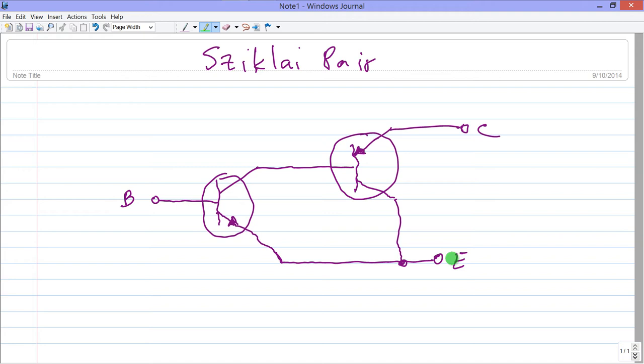Electrons flow in here like this, through this emitter-base junction. They also can flow from this main emitter here into the collector here and back out through the collector here.